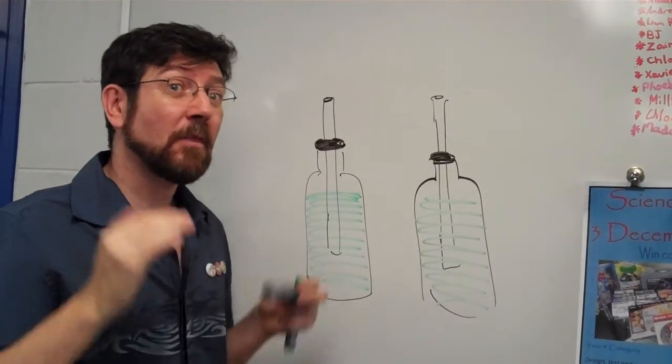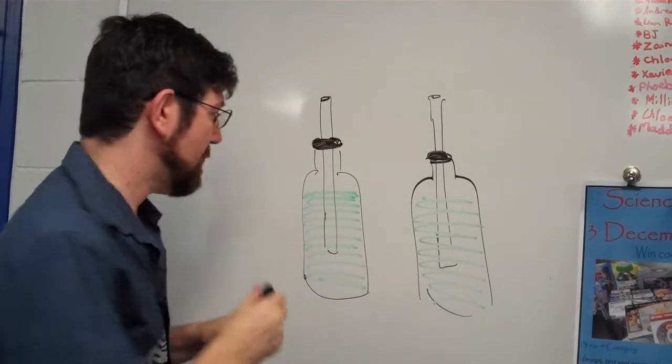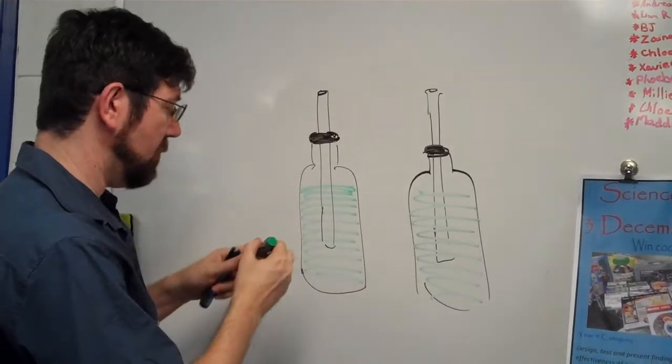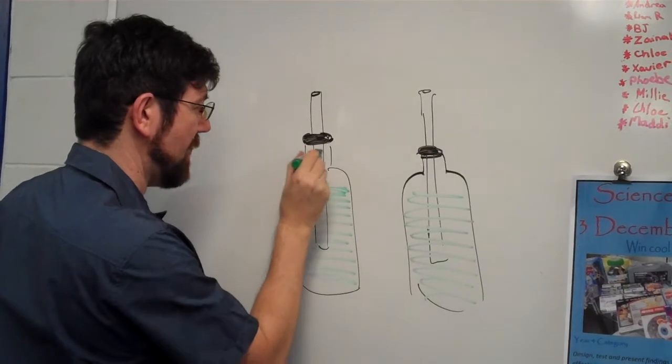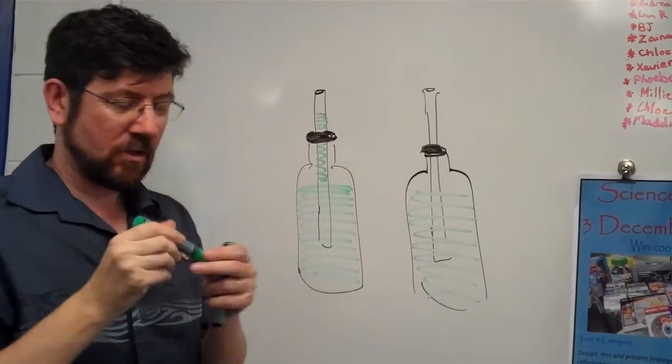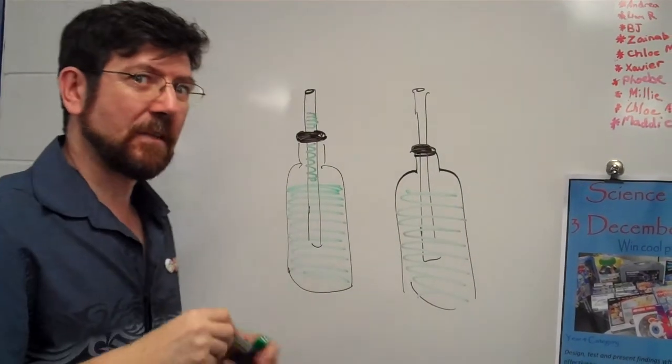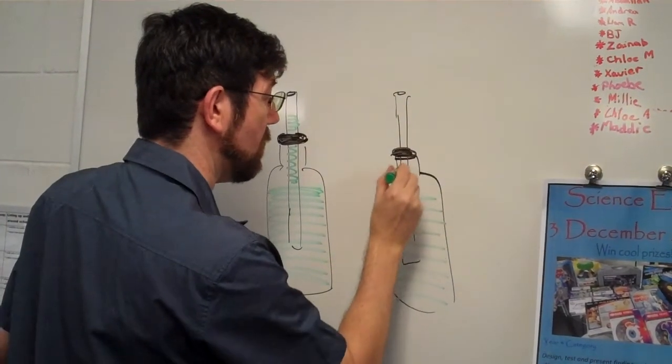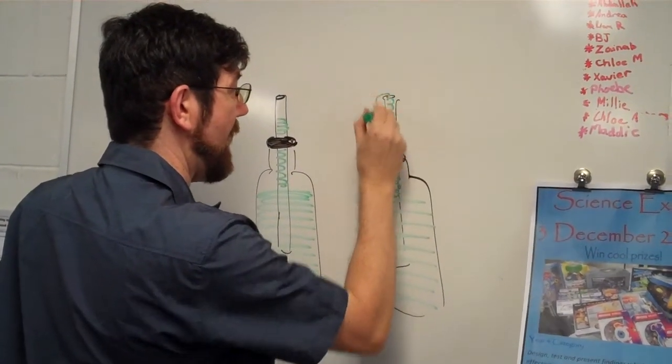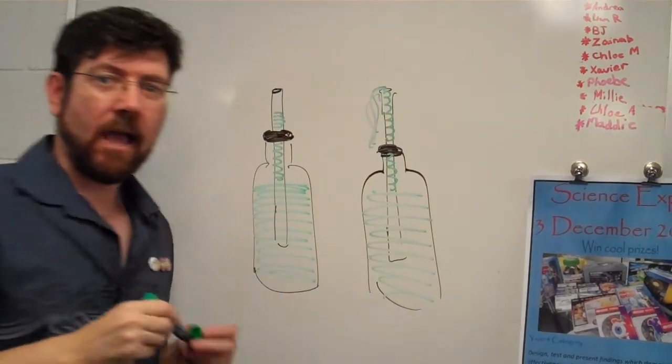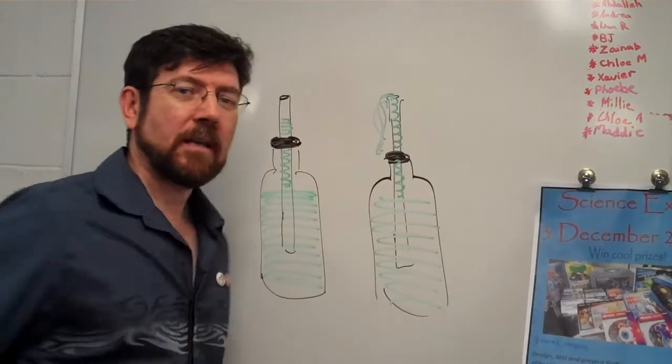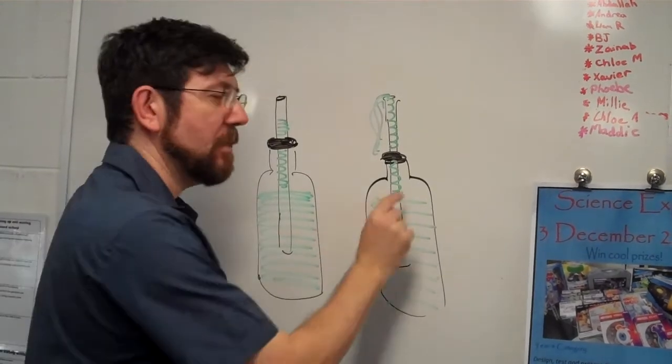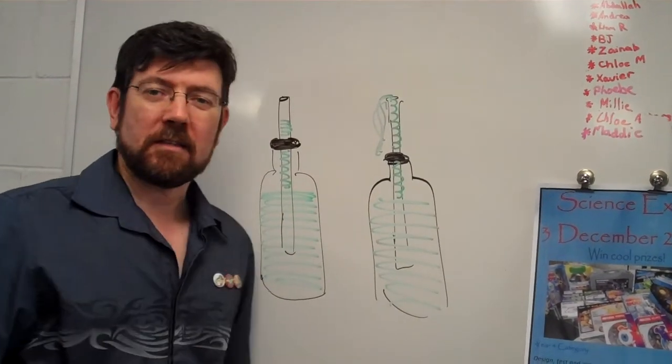And the higher up the tube it goes, the more it's expanding, the hotter it is. So you might have one bottle where the liquid comes up about this much, but in the other bottle, if it's heating up more, then the liquid might actually come all the way up the tube and start running out of the bottle. That means that this liquid is expanding more, which means that this liquid is hotter than this liquid.